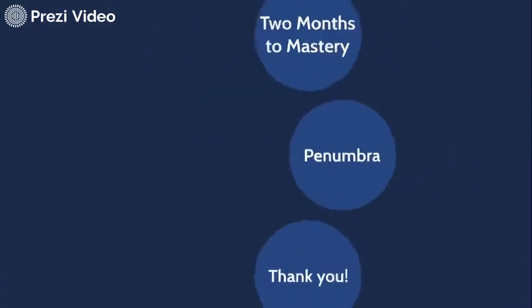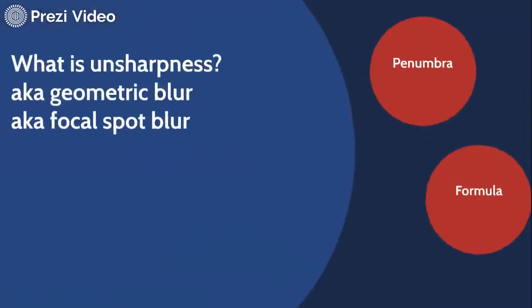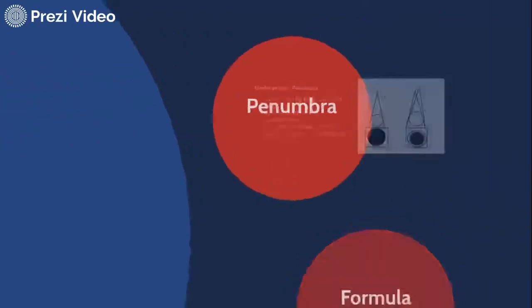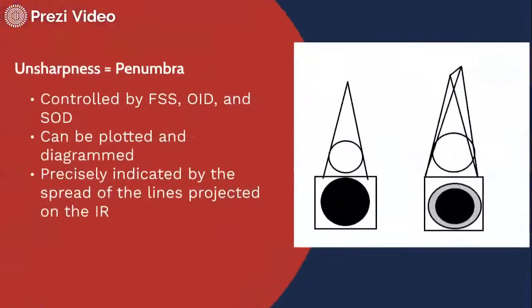But today specifically I want to talk to you about penumbra. To do that, let's ask the question: what is unsharpness? Some instructors may refer to it as geometric blur or focal spot blur, but probably the best general term for it is penumbra.